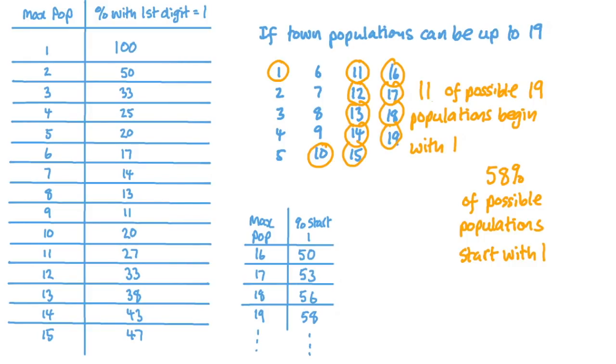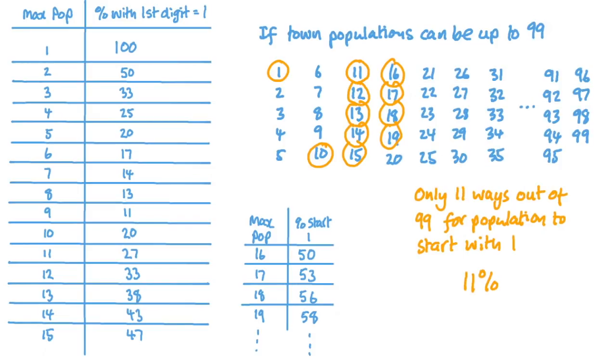Then, we could think about towns with populations of up to 99 people. And the proportion of towns with population first digits of one will reduce down to 11 out of 99. That's just over 11%.